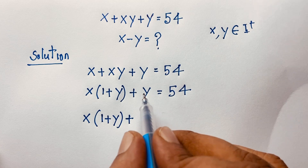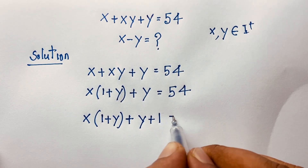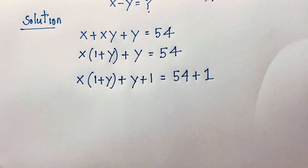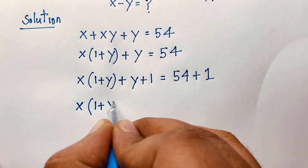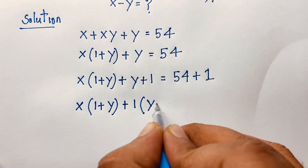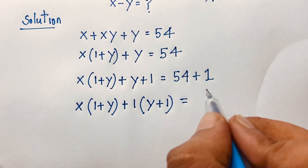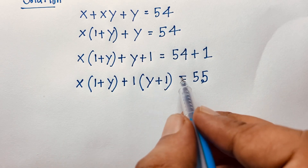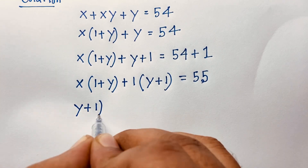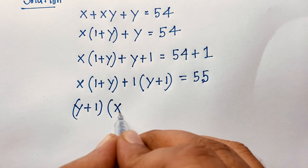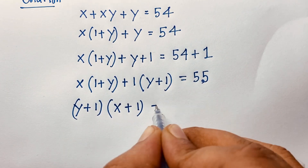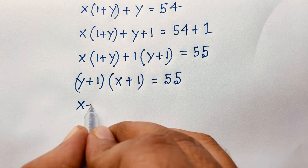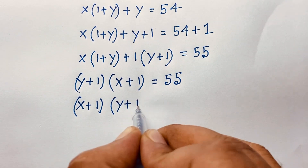Now I add 1 to both sides, giving x times (1 plus y) plus (y plus 1) equals 55. Since (1 plus y) appears in both terms, we factor it out: (x plus 1) times (y plus 1) equals 55.